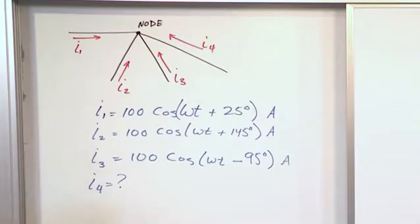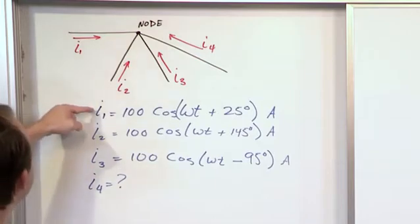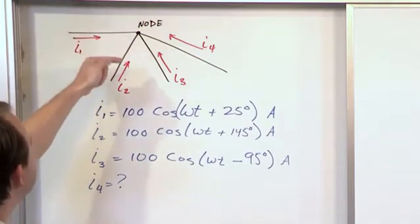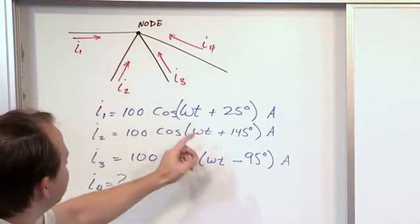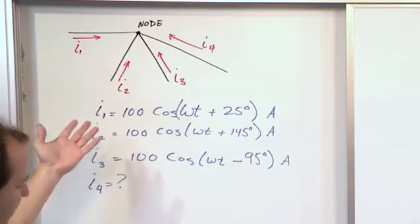Now if we didn't use phasors, this would be incredibly tricky to solve really because I1 is a cosine, and even if I give you the frequency, I mean I just have omega t here because it doesn't really particularly matter.